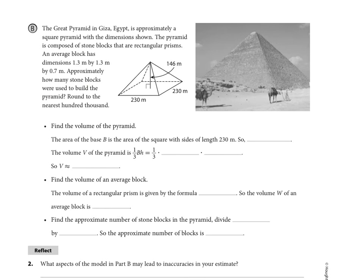It says the area of the base B is the area of the square with sides of length 230. So we're just going to say that B is 230 squared, or 52,900, and that is meters squared. So if we take that value and we multiply it by the height that we're told, which is from the apex of the pyramid down through the center at a 90 degree angle, so 146 meters is what we're looking at for the height of the pyramid.